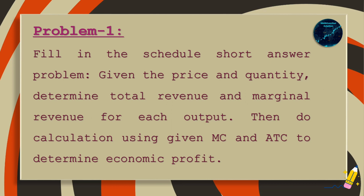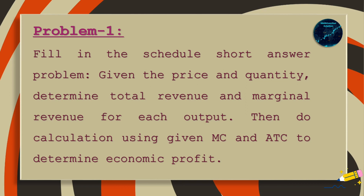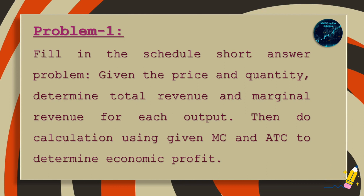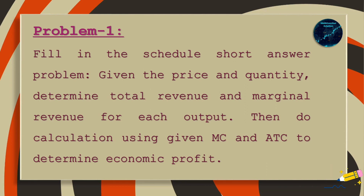Problem 1: Fill in the schedule short answer problem. Given the price and quantity, determine total revenue and marginal revenue for each output. Then do a calculation using the given marginal cost and average total cost to determine economic profit.